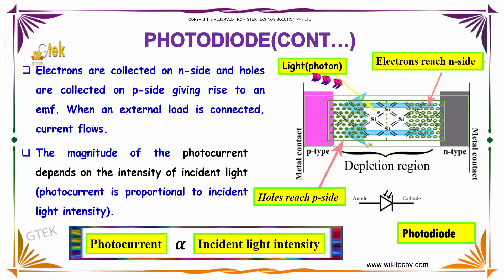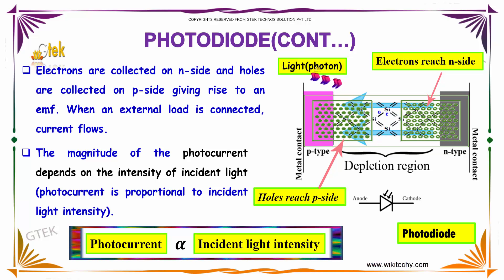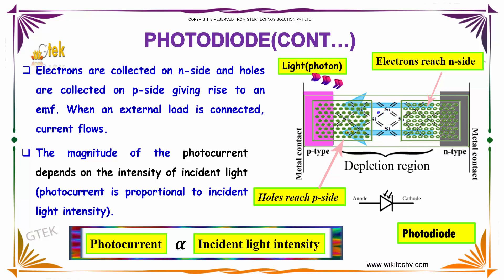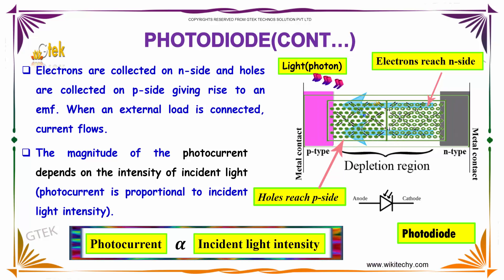The magnitude of the photocurrent depends on the incident light and its intensity. The photocurrent is directly proportional to the incident light intensity.